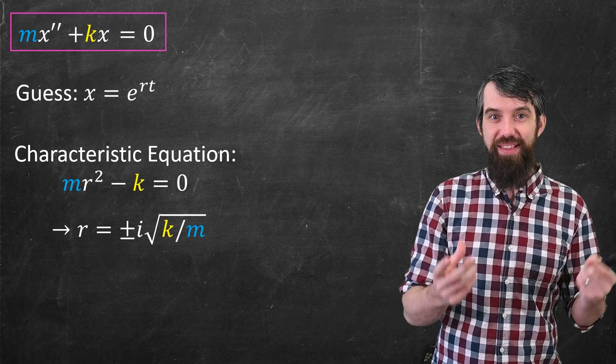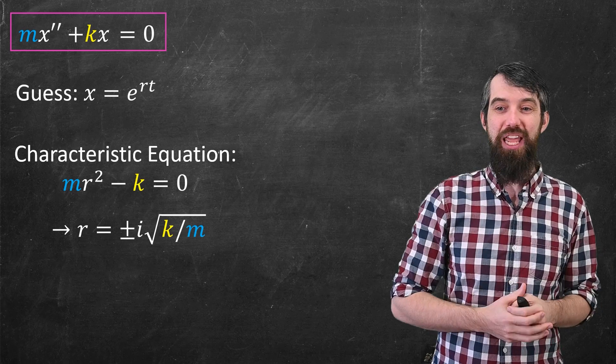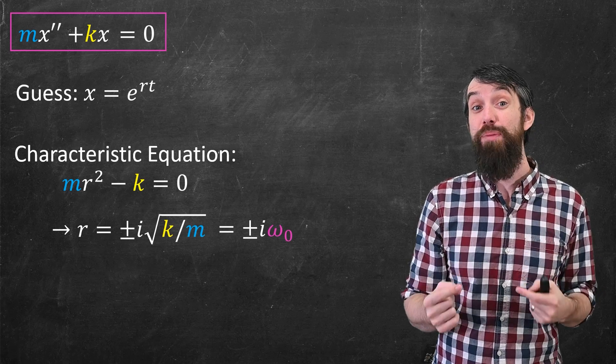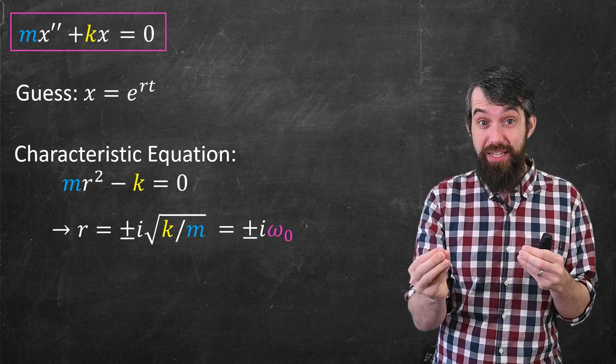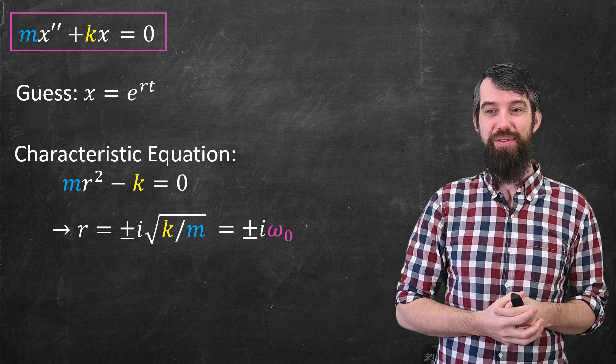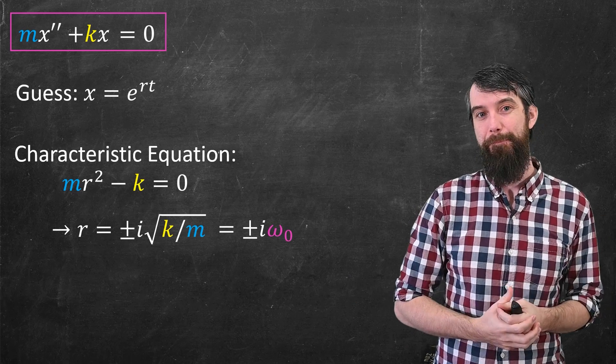The only thing that I'm going to do that's new here is, I sometimes like to relabel this. Square root k over m, it comes up a lot. Sometimes this is relabeled as ω₀. Omega naught here just stands for basically the frequency, as I'll show you in a little moment. So it's just a shorthand for root k over m.